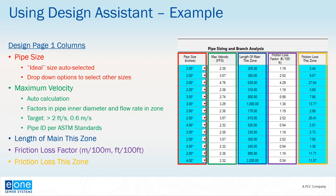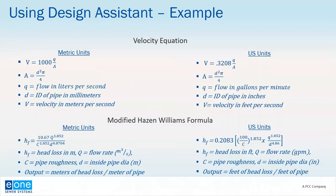Design Assistant calculations use commonly accepted equations to determine velocity and friction loss. Velocity equations are a dimensional analysis to convert flow rate into velocity — with flow rate and inner diameter of the pipe known, we solve for velocity in feet per second or meters per second. For friction loss, the software uses the modified Hazen-Williams equation. Hazen-Williams is a simple and reliable method for determining friction loss with fluid flow in a pipe. Other methods exist, but Hazen-Williams provides the quickest results with the highest level of accuracy for pressure sewers. These equations are well documented and available from a variety of sources including E1.